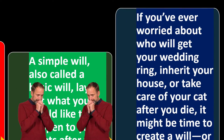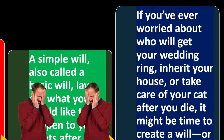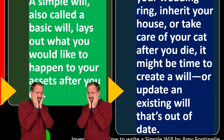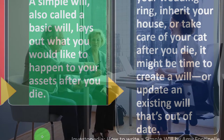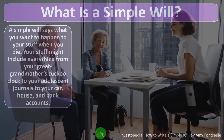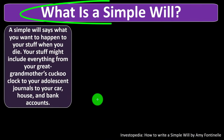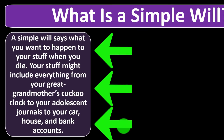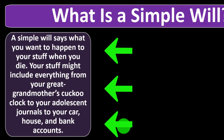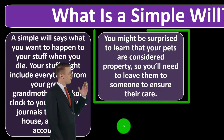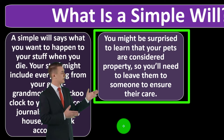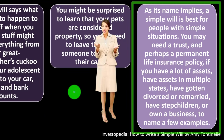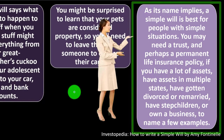If you're ever worried about who will get your wedding ring, inherit your house, or take care of your cat after you die, it might be time to create a will or update an existing one. A simple will says what you want to happen to your stuff when you die — from your great-grandmother's cuckoo clock to your car, house, and bank accounts. Note that your pets are considered property, so you'll need to leave them to someone to ensure their care.